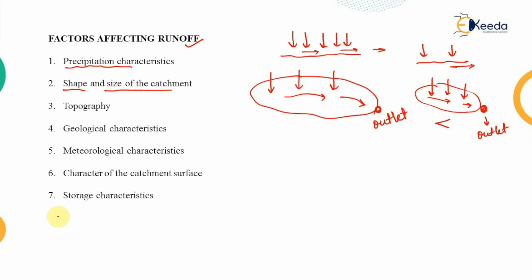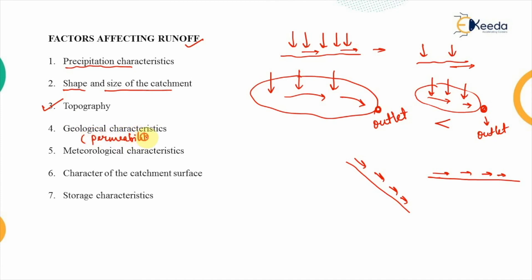The next factor is the topography of the catchment. Runoff depends upon surface smoothness and slope. If the slope is very steep, runoff happens very quickly. If the slope is flat, runoff happens very slowly. The next factor is geological characteristics, the most important being the permeability of the soil and soil composition. If soil permeability is very high, seepage is also very high, increasing subsurface runoff components while surface runoff becomes lesser. If the surface is rocky, absorption is almost nil, resulting in more runoff.